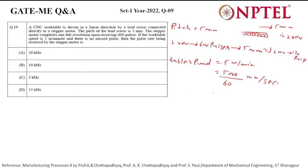How many pulses? Total pulse for 5000 by 60 mm would be 5000 by 60 into 120.